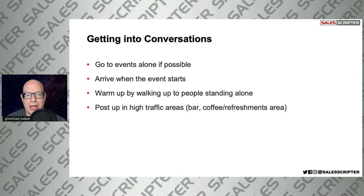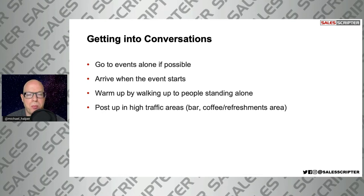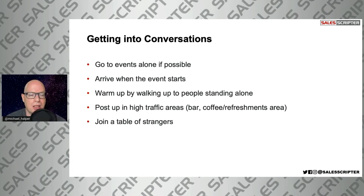Once you get beyond that, another way to get into new conversations is to post up — meaning hang around high traffic areas. High traffic areas could be the entrance, the registration stand, the bar, or coffee and refreshments area. For example, stand in line at the bar, get your beverage, and instead of walking far away, hang out near the bar and sip your drink. As people come to that area and get their drink and start to walk away, that's a real easy way to make eye contact, nod, and say, 'Hey, how you doing?' It's an additional way to get into conversations when you're alone.